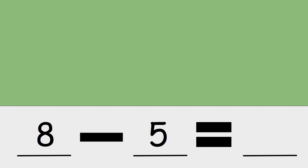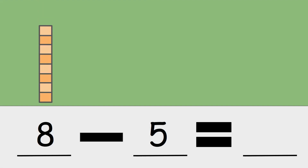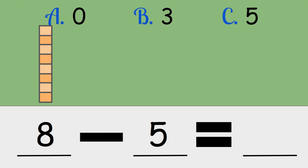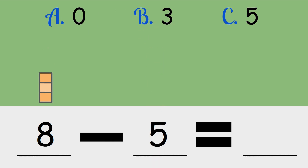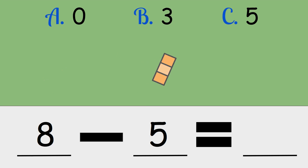Eight minus five. Is the answer zero, three, or five? Eight minus five is three.